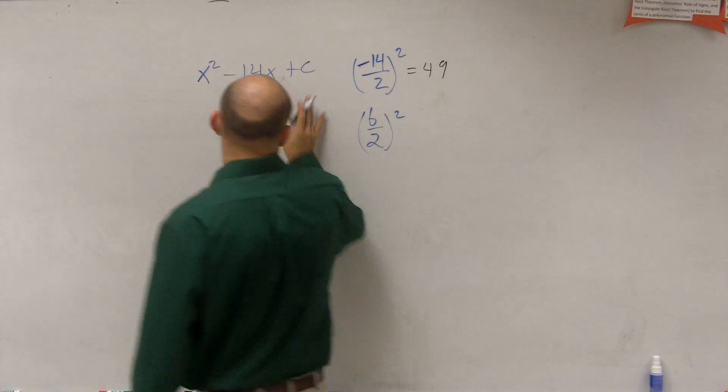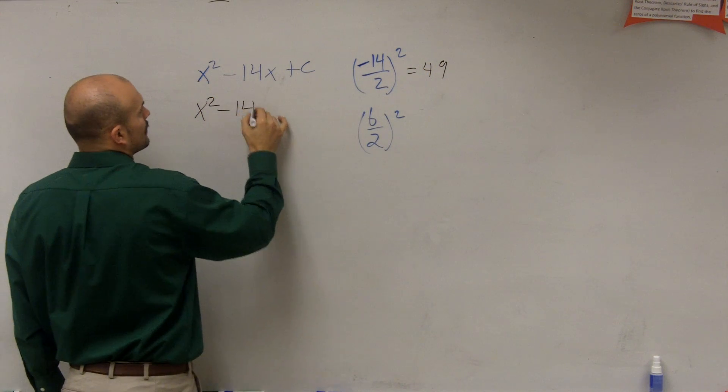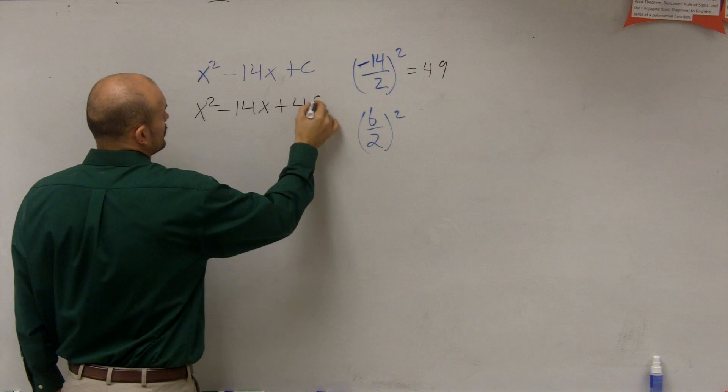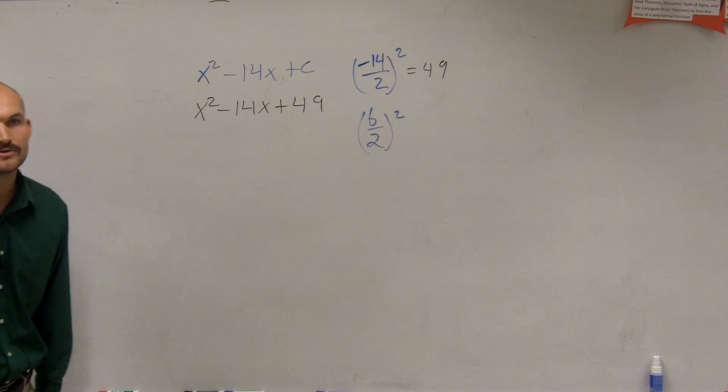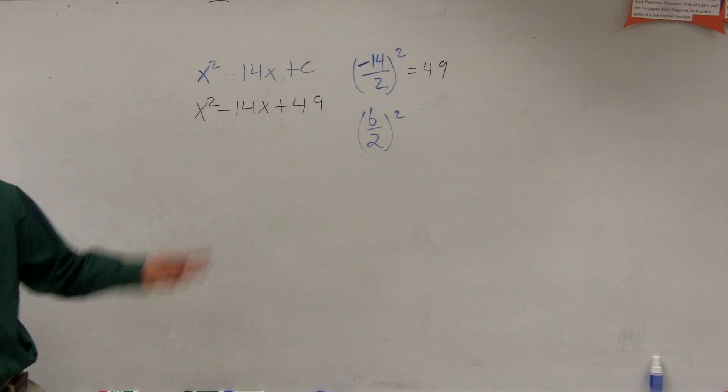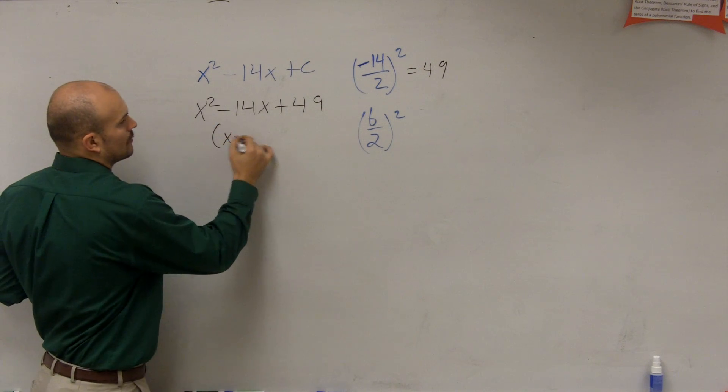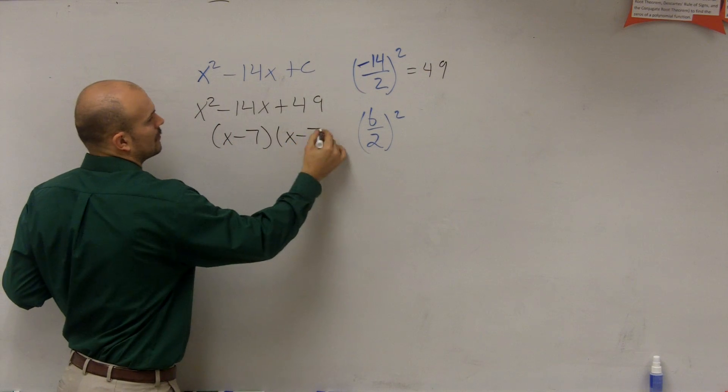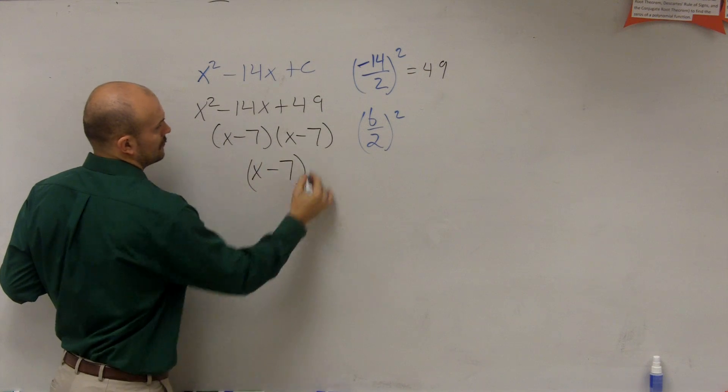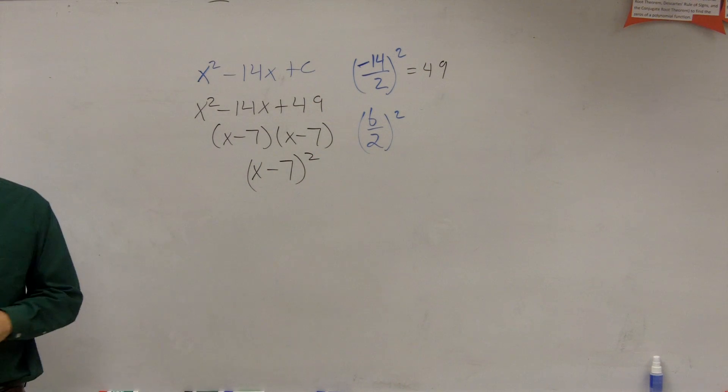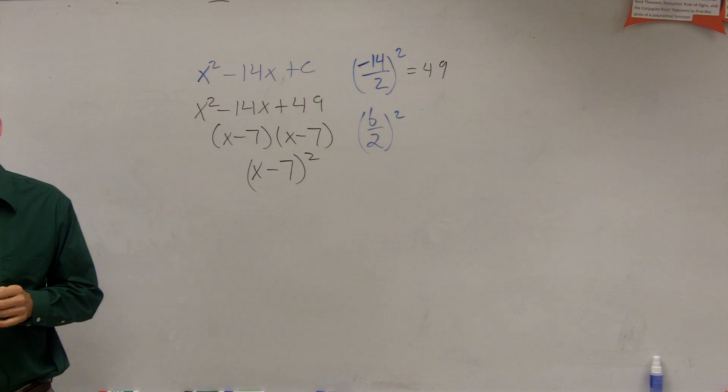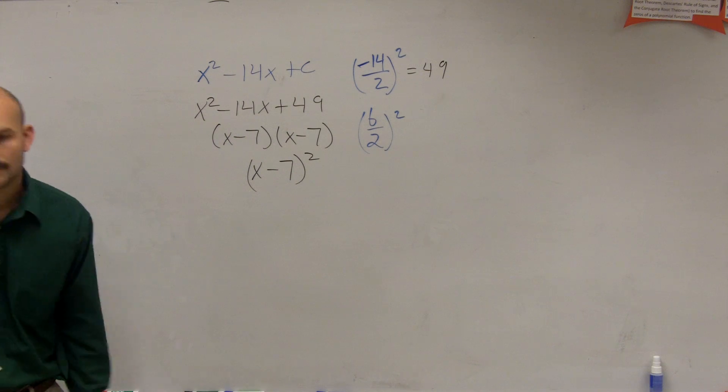Let's take a look at that. If I put 49 in for c, is this now a perfect square trinomial? Yeah, it is. And what is going to be the value of its perfect square? That's it. That's all you got to do.